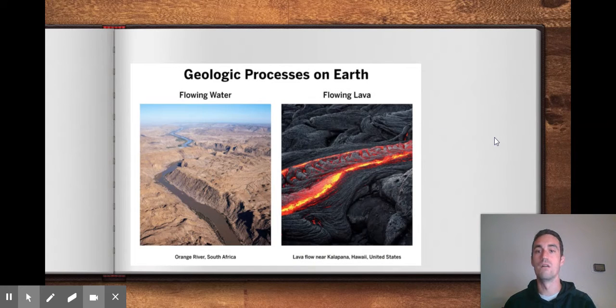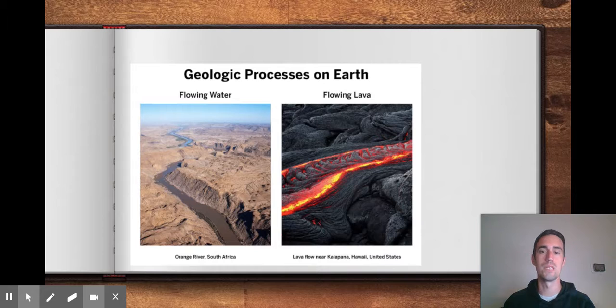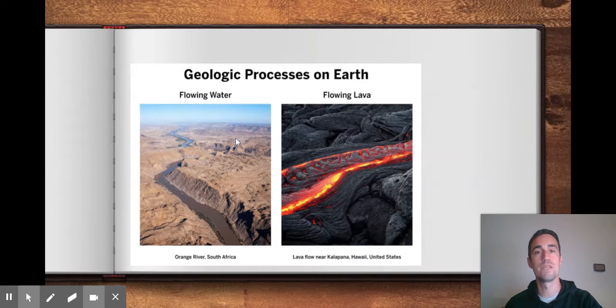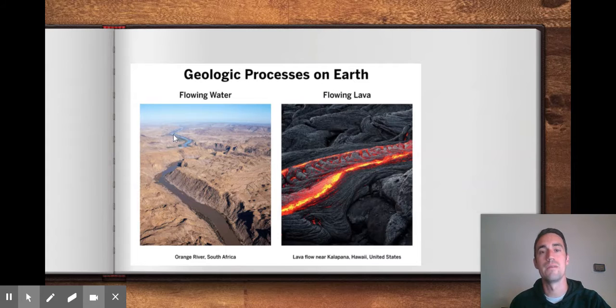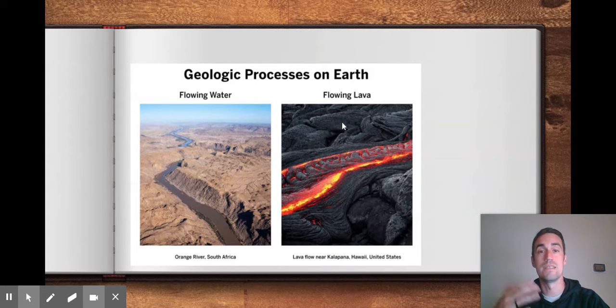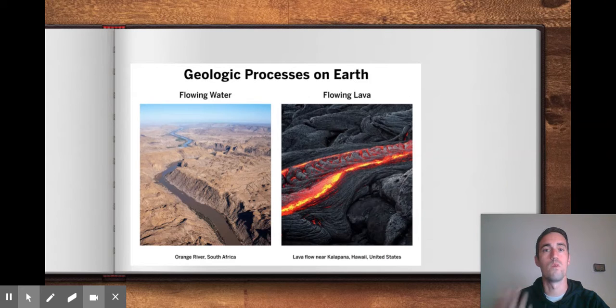We looked at aerial images of flowing water and flowing lava. You should have made some observations yesterday about how the channels made by flowing water were much thinner or narrower. They had long winds and curves throughout them and they tended to carve deeper into the rock than the ones of flowing lava.